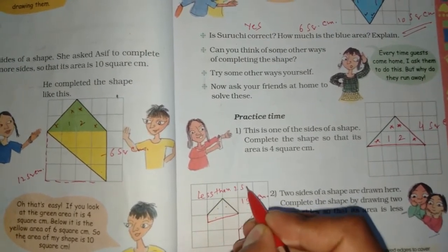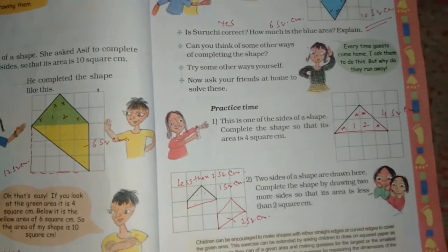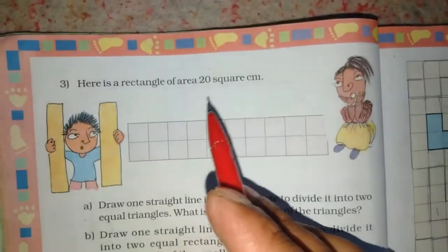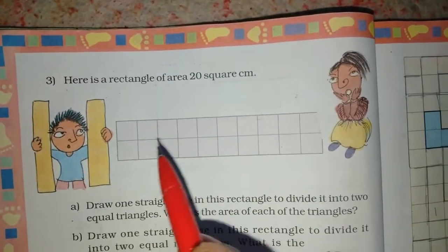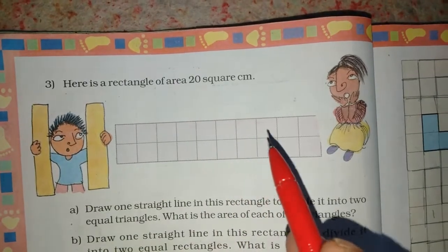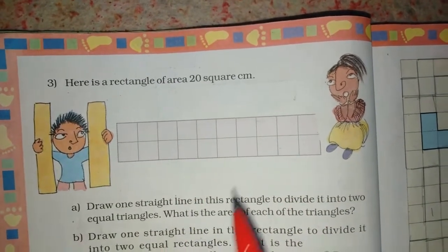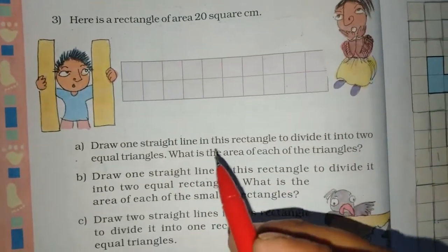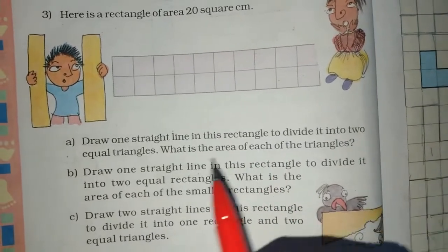Which are our questions? Here is the rectangle of area 20 square centimeter. 1, 2, 3, 4, 5, 6, 7, 8, 9, or 10. Draw one straight line in this rectangle to divide it into equal triangles.